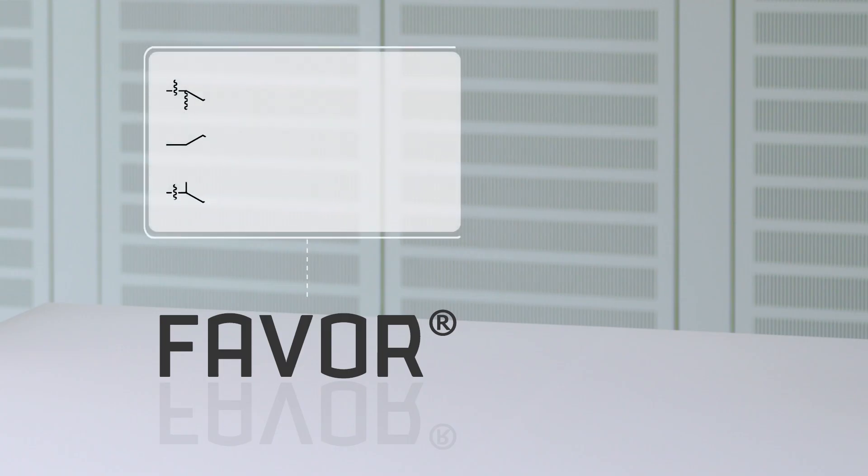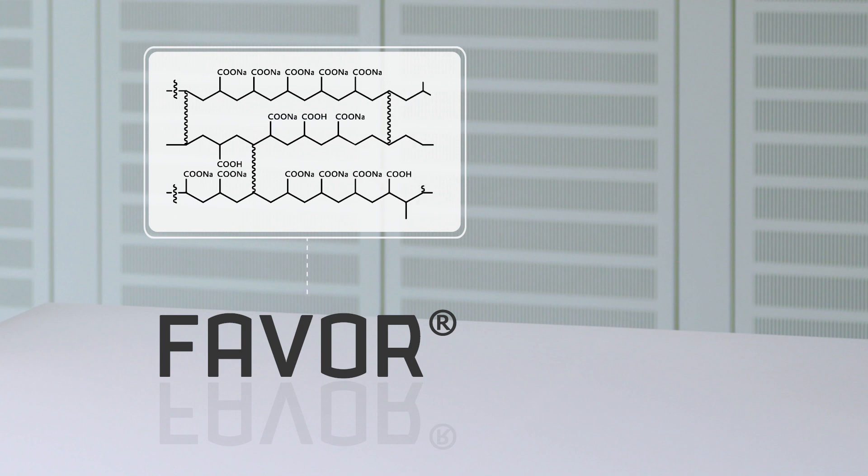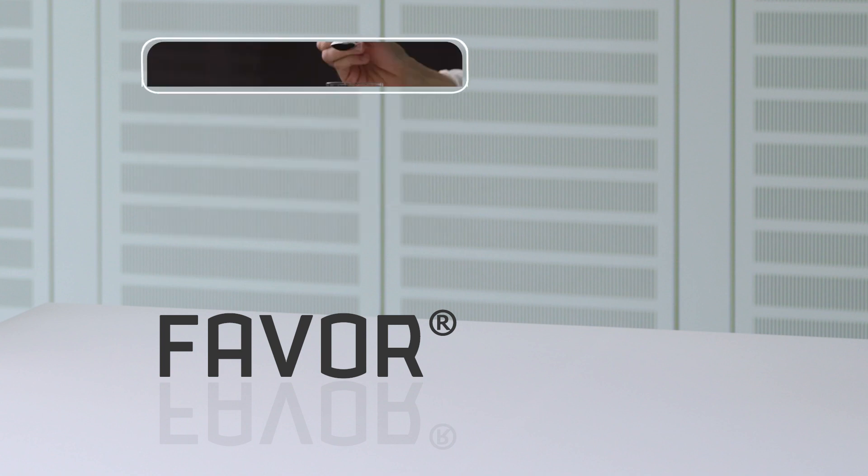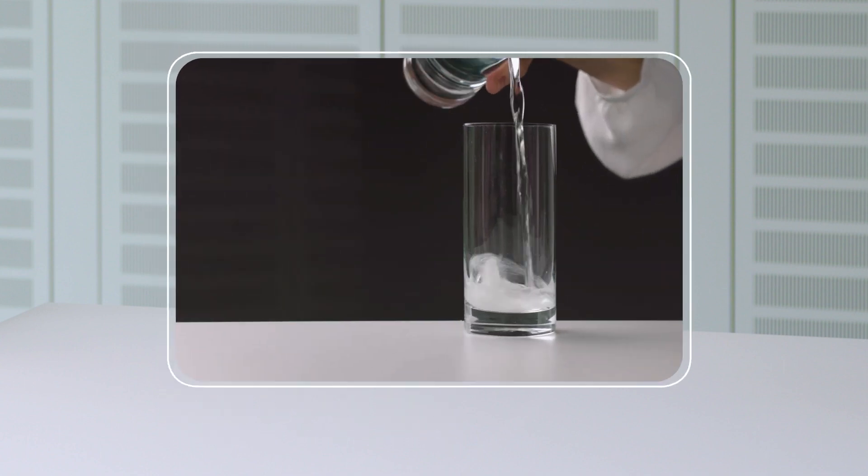Favor is a superabsorbent polymer which can absorb large amounts of aqueous liquid, up to 1000 times its own weight.